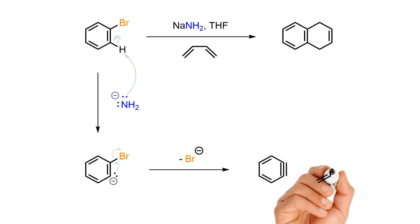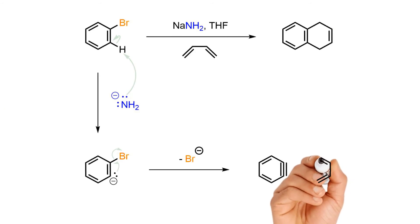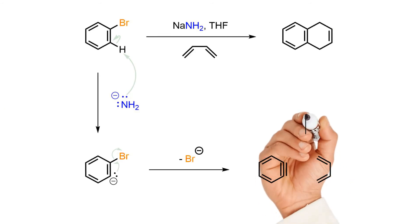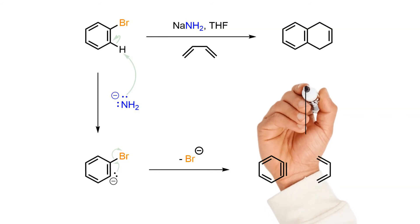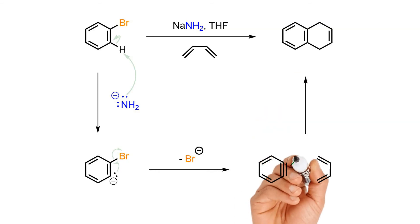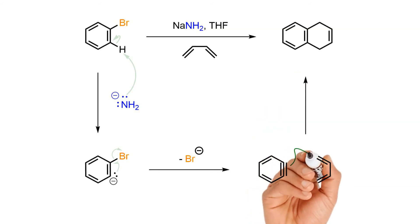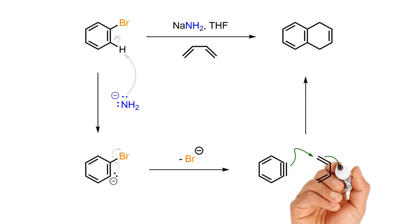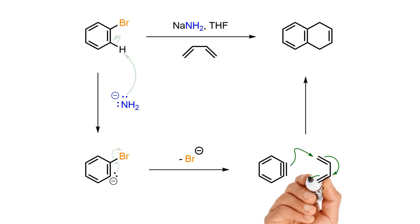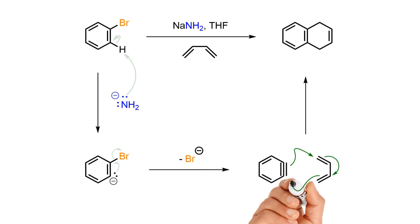Since the benzyne species has been generated in the presence of a conjugated diene, a Diels-Alder 4+2 cycloaddition ensues with creation of an annulated six-membered ring attached to the original aryl ring.